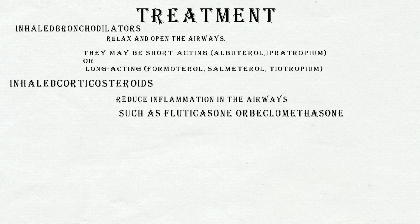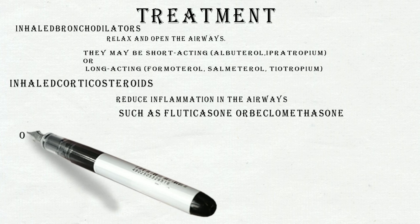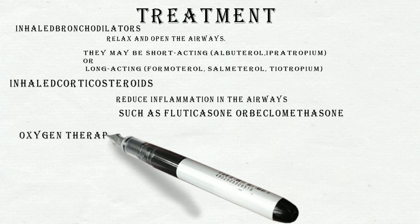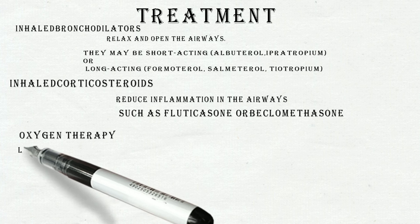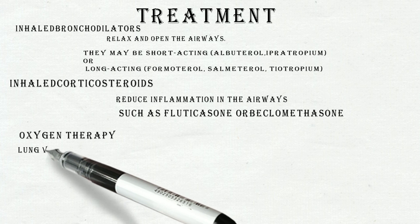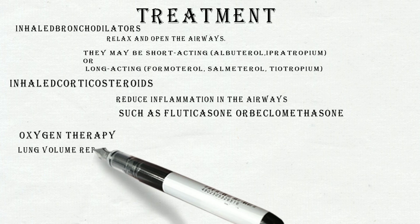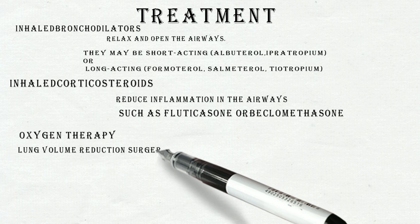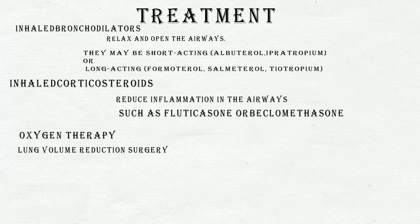Oral or intravenous corticosteroids are used for exacerbations — sudden worsening of emphysema. Oxygen therapy is used for people with severe emphysema and low oxygen in the blood. Lung volume reduction surgery involves surgical removal of large areas of damaged lung, which can improve the function of the healthy part of the lung.